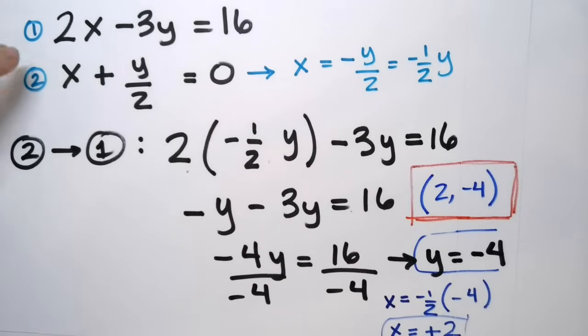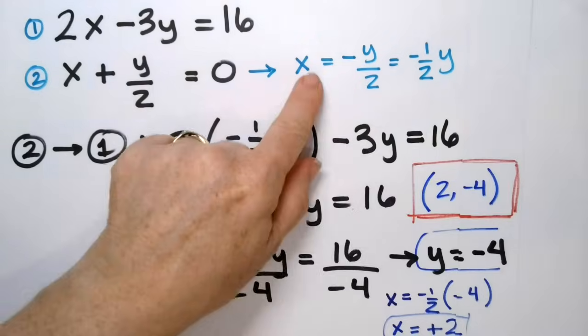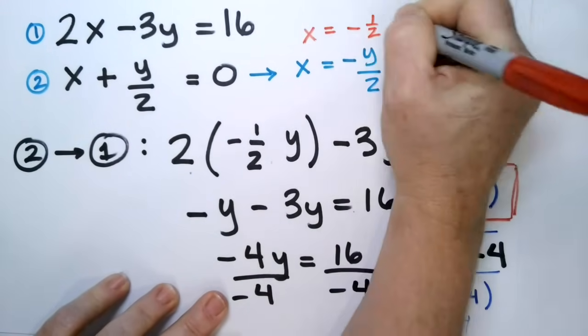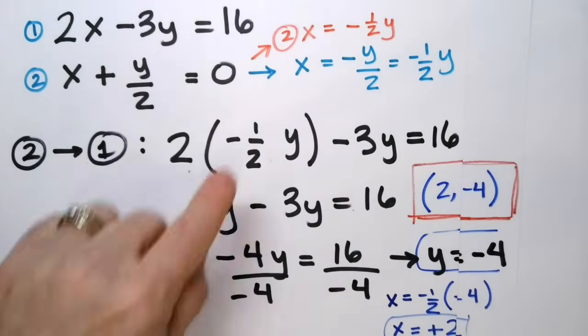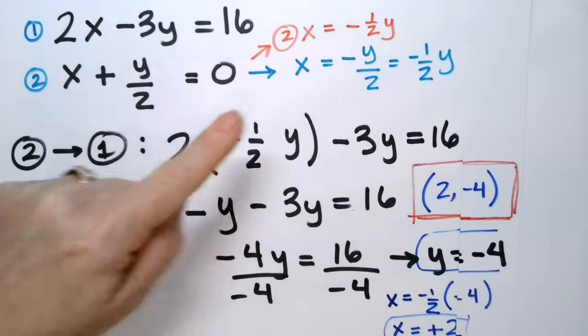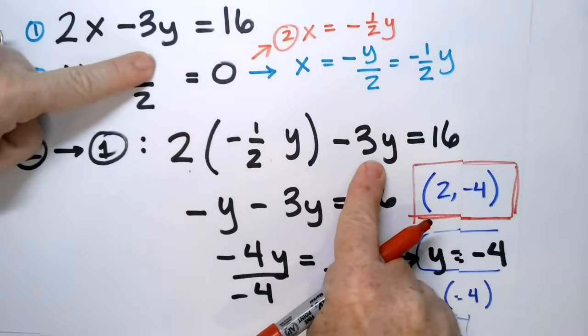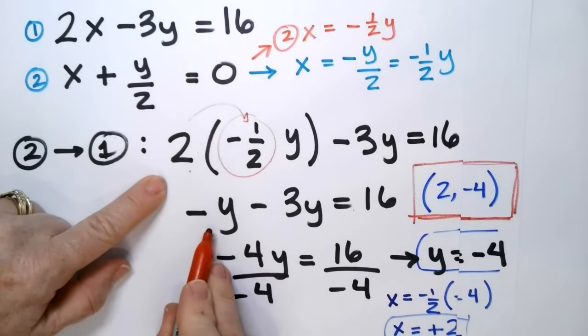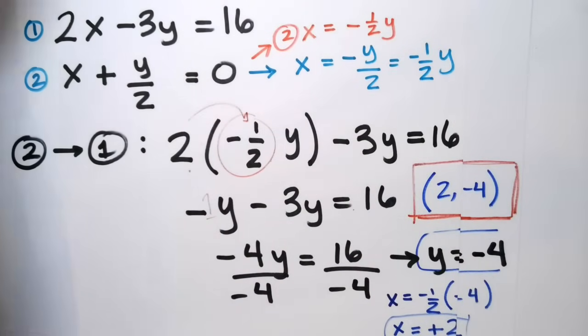We took this and we substituted it in where there was an x. 2 times this thing, x, minus 3y equals 16. We just shove it in. And then you multiply it out. 2 times minus 1 half gives you a minus 1. There's a minus 1 hidden here. Minus 3y is here equals 16. And then you just, we call it plugging and chugging. You just plug and chug until you get to the answer.